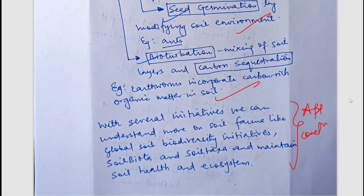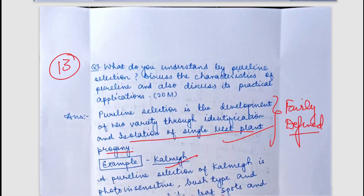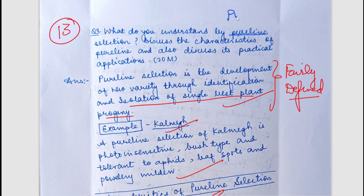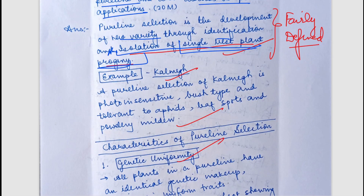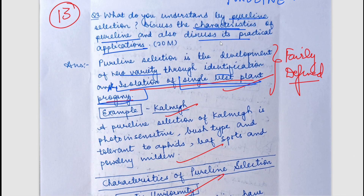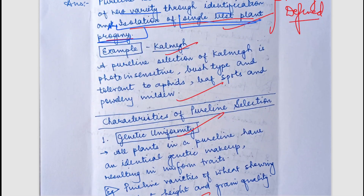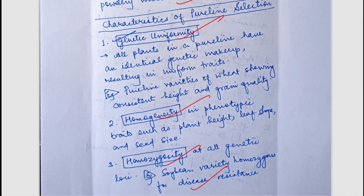The third question was: what do you understand by pure line selection? Discuss the characteristics of pure line and its practical applications. Pure line selection is the development of a new variety through identification and isolation of a single best plant progeny — that is the key term here. An example variety mentioned is Calmec. Characteristics include being genetically uniform, homozygous, homogenous, stable, and consistent in reproductive ability.